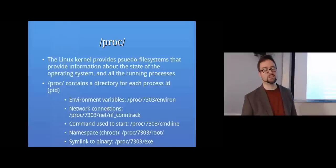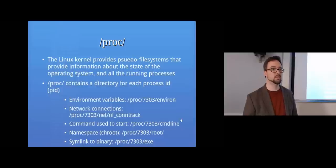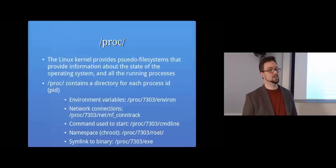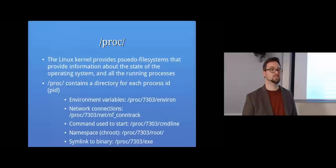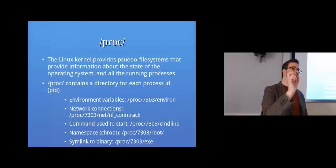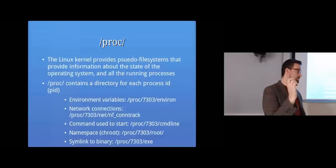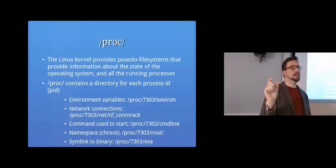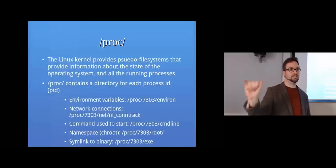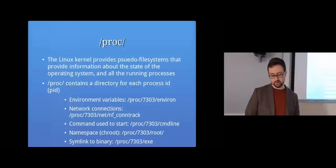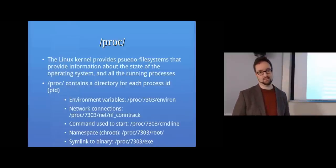You can see all the network connections for a specific process inside the net directory, see the command used to start the process, see the namespace showing which files that process can see, and see the symlink to the binary that was used to start the program. Interestingly, if a program starts and then deletes itself, it may no longer be on disk, but looking inside the /proc directory gives you access to the original program even though it's been deleted.